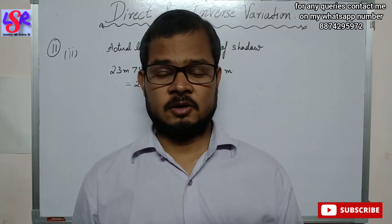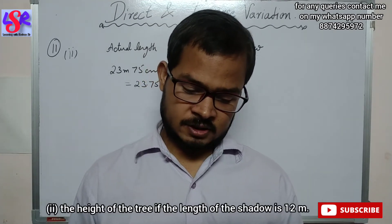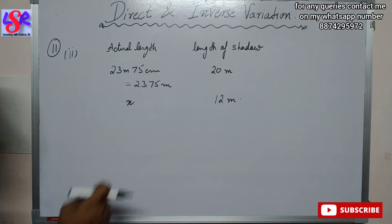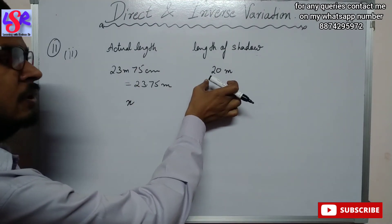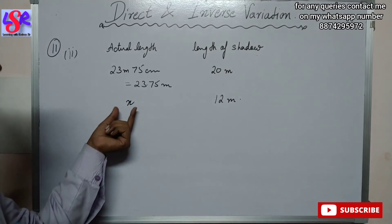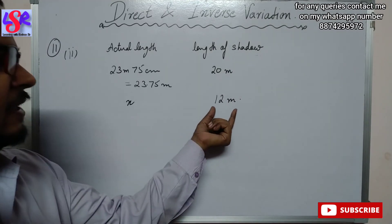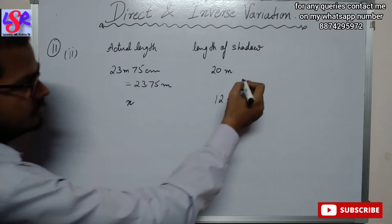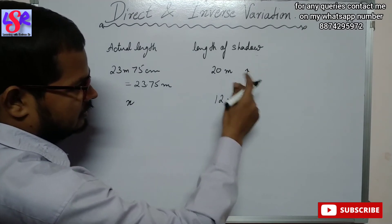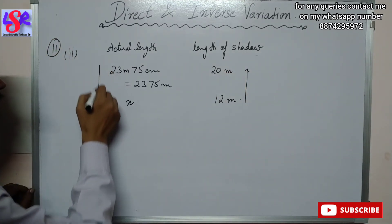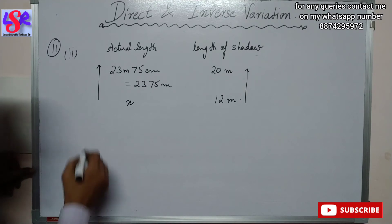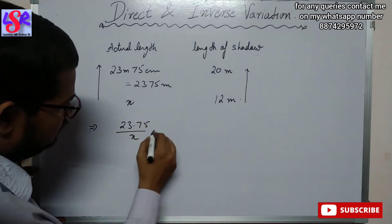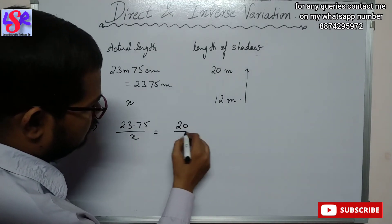Now we will do the second part, in which the height of the tree is to be calculated if the length of the shadow is 12 meter. We are again given the same relation for the tank and have to find the actual length of the tree which has a shadow of 12 meter. This is a direct variation, so we put the arrow upward as 23.75 is greater. We write: 23.75 upon x equals to 20 upon 12.